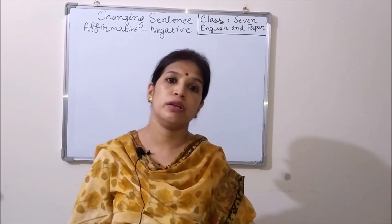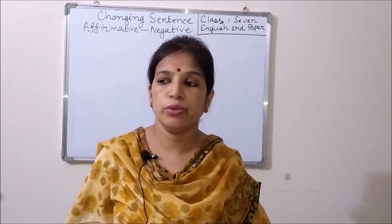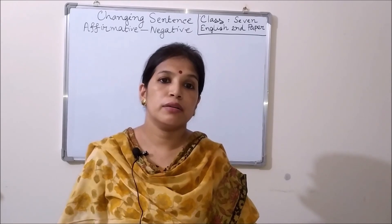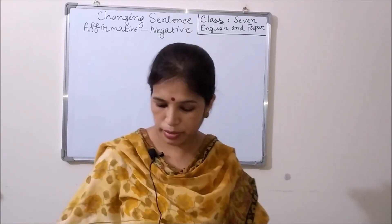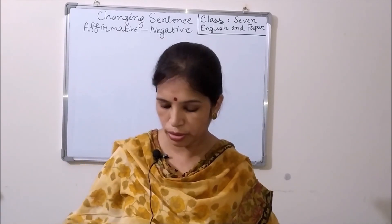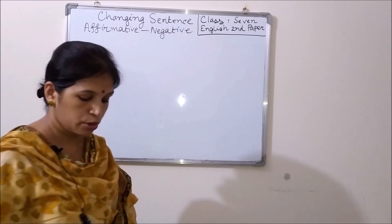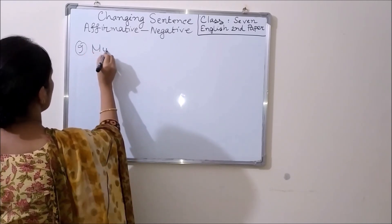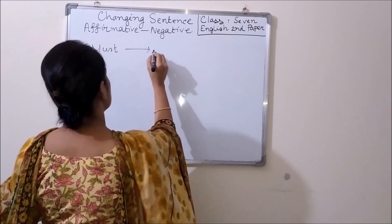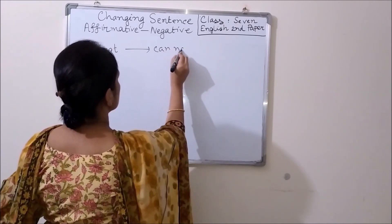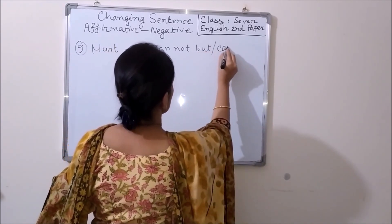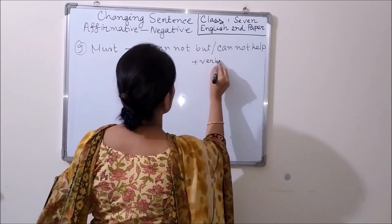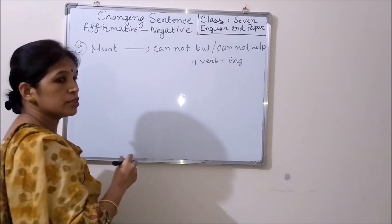Today we will complete the lesson affirmative to negative. Let us start our today's lesson. Take your notebook. Continue the class attentively. Today's first rule is rule number 9. Sometimes we get the modal auxiliary verb 'must' in affirmative sentences. Then we have to use 'cannot but' or 'cannot help' plus verb plus '-ing' to make the affirmative sentence into negative.